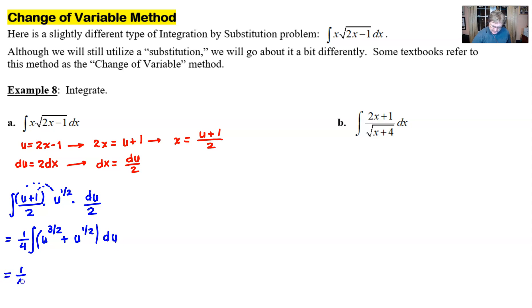Now when we integrate, one fourth sits and waits patiently. The u to the three halves will become, let's save some space here, I always like to save a little space. Add one to my exponent. Look at this right here. Add one to my exponent to get five halves. And then instead of dividing by five halves, remember how we talked, you could just multiply by the reciprocal two fifths.